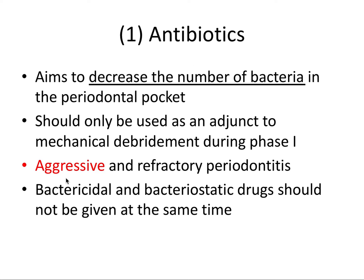Antibiotics should not be used for all cases of periodontitis. For the board exam, remember that the aggressive form of periodontitis is where antibiotics are most often employed. So localized aggressive periodontitis would be the time when you want to use antibiotics. Also, refractory periodontitis — cases that do not resolve despite undergoing all proper treatment — is also a case when you'd add in antibiotics. Remember: A for aggressive, A for antibiotics, and aggressive periodontitis is also linked to the AA bacteria. So you can remember all those A's together.